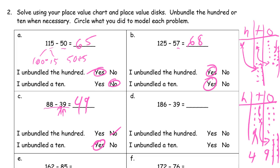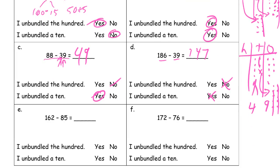For 186 minus 39 — it's very similar, except instead of starting with 8 ones I have 6 ones. I'm still going to have to unbundle a 10. I won't have to unbundle the 100 because I have plenty of tens. I still have that 100. Starting with 2 fewer ones means I'll have 2 fewer ones at the end, so I'll have 147 left. That's using the first problem to figure out the second.